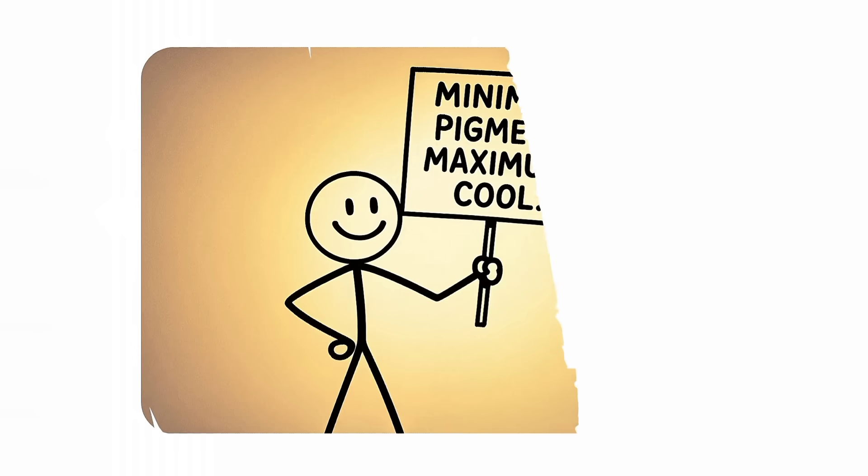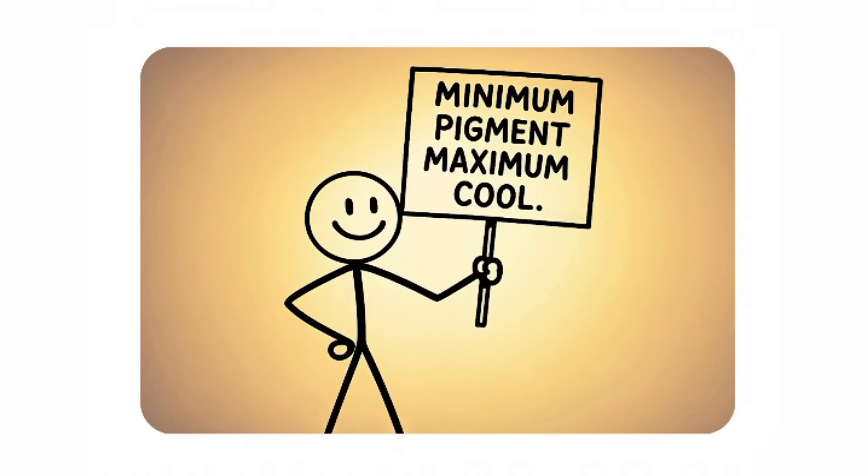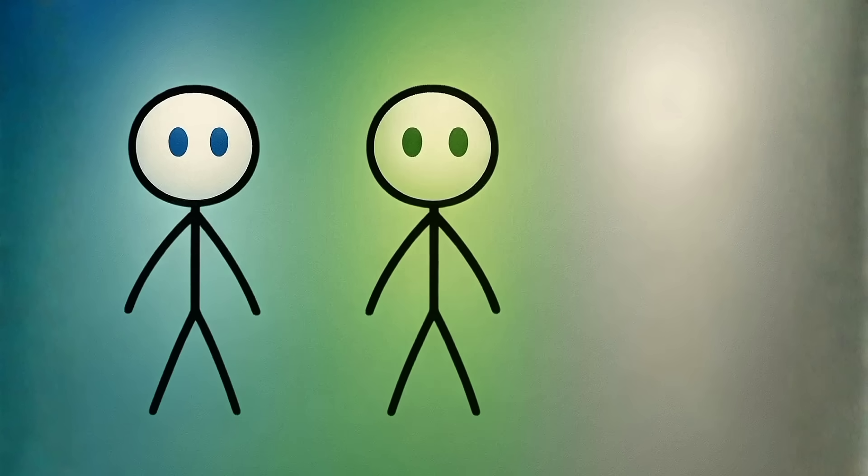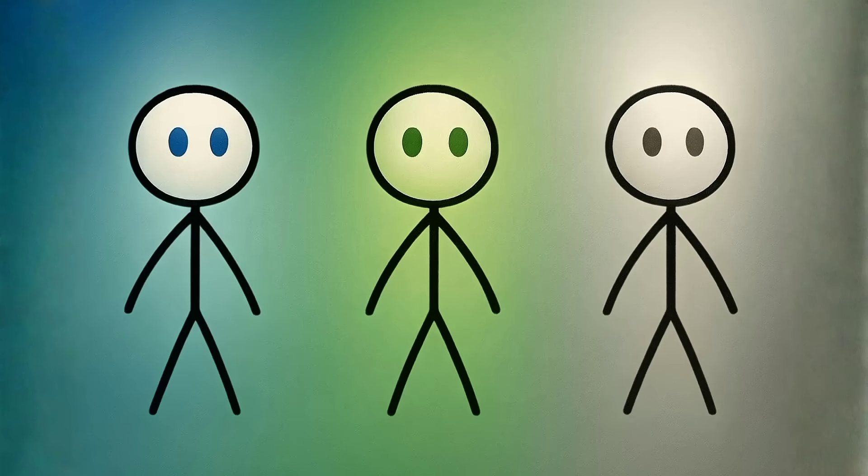If you have gray eyes, congratulations. You might be living proof of the minimum pigment path. Because of low pigment, gray eyes can shift between blue, green, or silver tones, depending on light and mood.